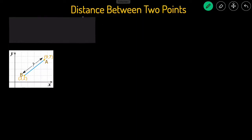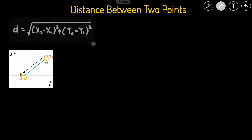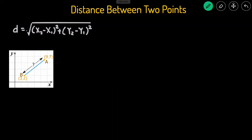In this video, we'll be going over how to find the distance between two points. To do so, we just have to use this equation. Distance is equal to the square root of x2 minus x1 squared plus y2 minus y1 squared. Or another way of saying this, distance is equal to the square root of the change in x squared plus the change in y squared.